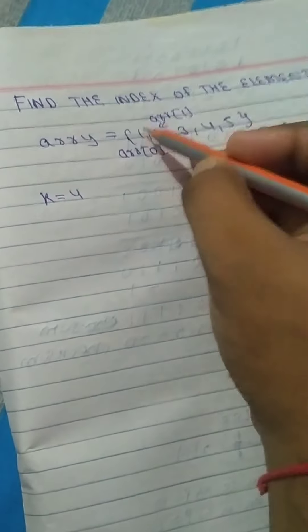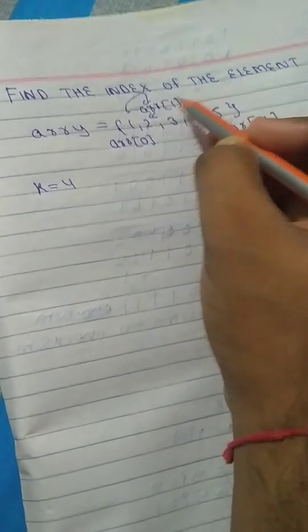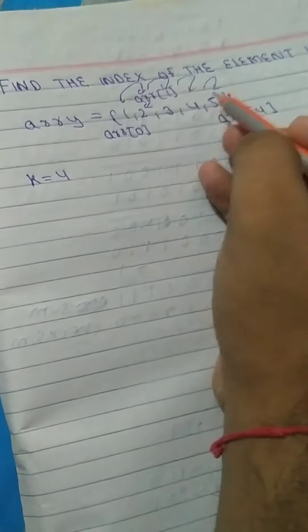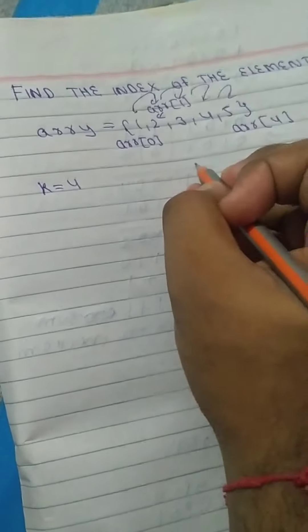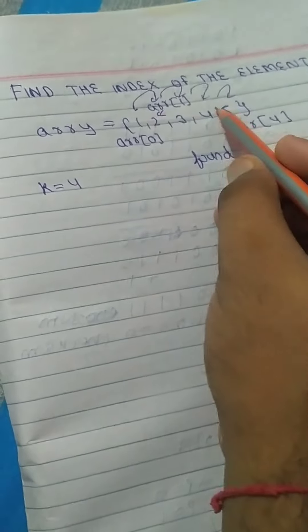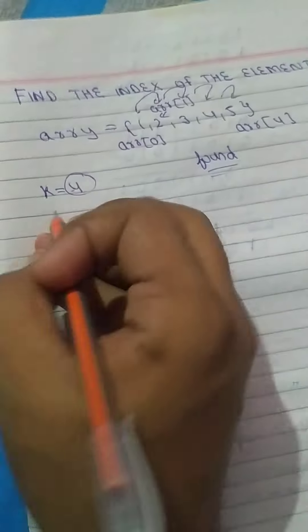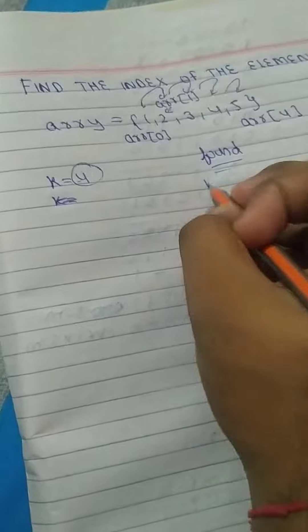You have to traverse from index number 0 to index number 4 until the element is found, using a for loop. If the element is found, you print 'found'. If the element is not present in the array, you print 'not found'. This is the overall approach and the problem is straightforward.